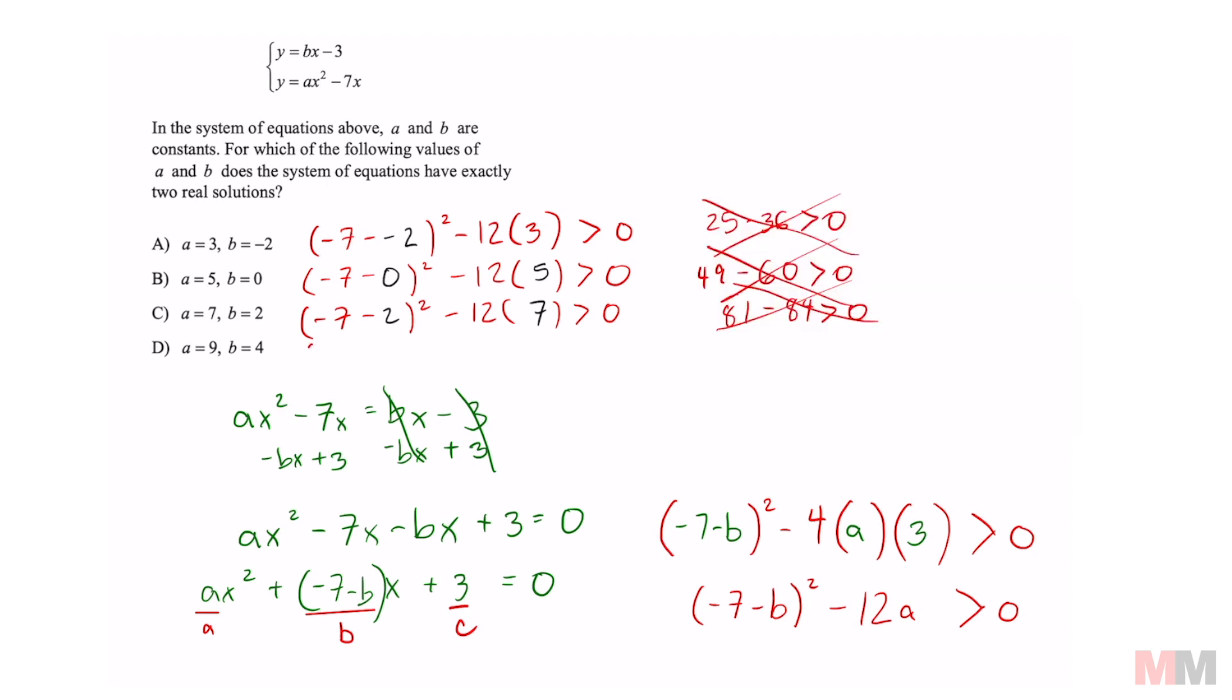And how unfortunate that it's the last one. But at least we know that that's going to be our answer. Negative 7 minus 4 squared minus 12 times 9 has to be greater than 0. This is going to be a negative 11 squared, which is 121 minus 12 times 9. 108. You don't have to compute it. But we know that it's going to be letter choice D.